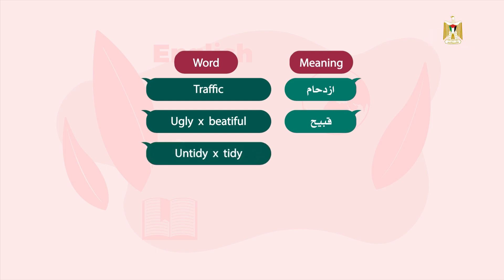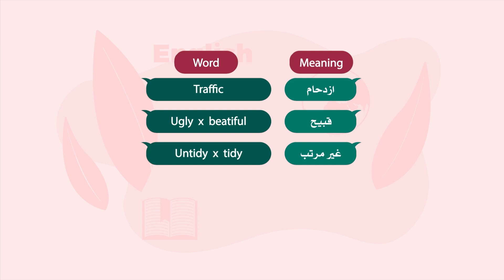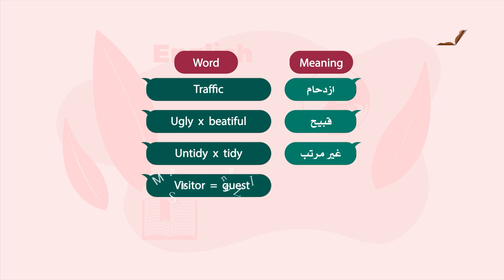The next word: untidy means غير مرتب (untidy), and its opposite is tidy, meaning مرتب (tidy). The last word: visitor means زائر (visitor), and it also equals guest.